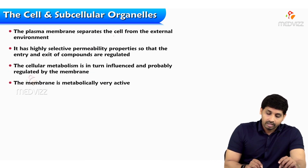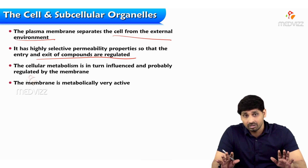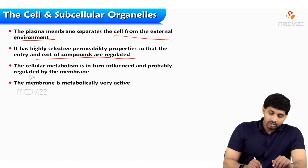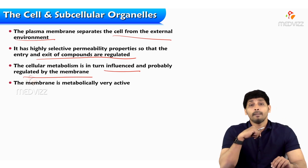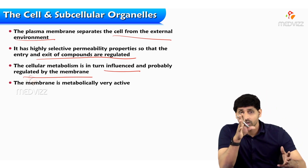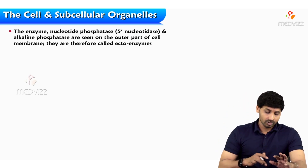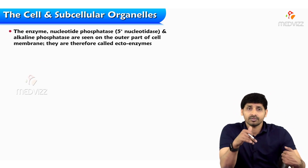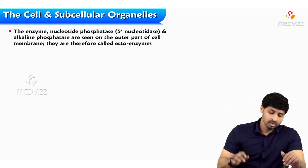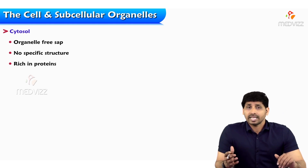The plasma membrane, which separates the cell from the external environment, has highly selective permeability properties so that entry and exit of compounds are regulated. The cellular metabolism is in turn influenced and regulated by the membrane. The membrane is metabolically very active. The marker enzymes are 5' nucleotidase and alkaline phosphatase for the biological membrane. That is all about biological membrane — thanks for listening.